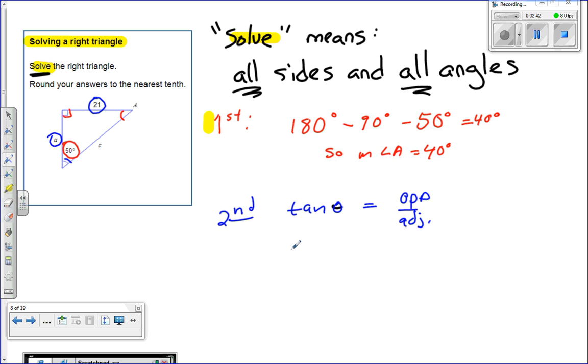So if I'm using the tangent, so we're saying tangent of 50 degrees, and there was other options there too. I just chose that one. Tangent of 50 degrees is going to be equal to 21 over A. And then we're just going to use some of those topics we used before to solve for A.